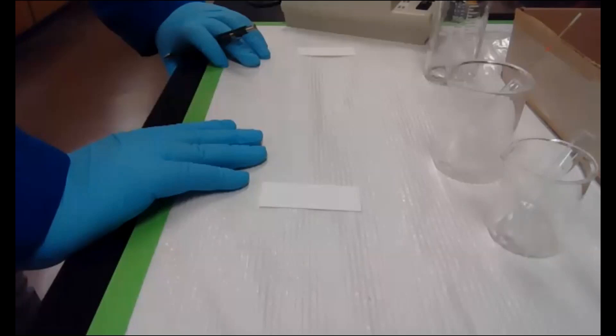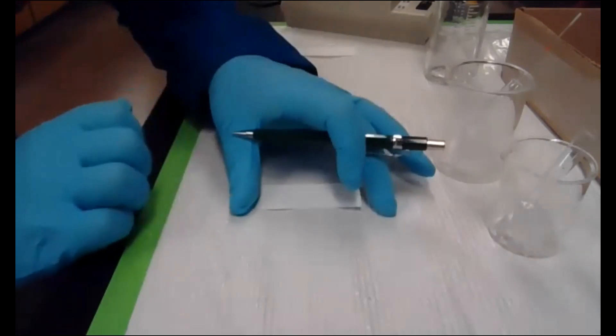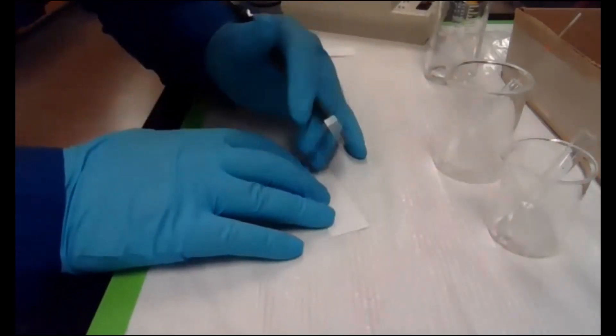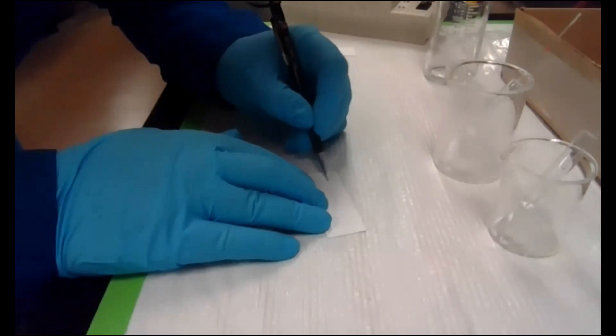So here we have Daniel. Daniel, what are you showing us right now? So first I'm going to be doing the TLC of the product we made, the phenacetin. So I have my TLC plate here and I'm going to use a pencil and draw my baseline of where I'm going to put my spot.